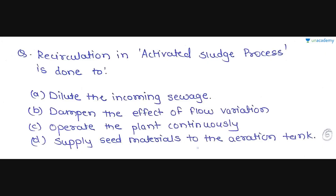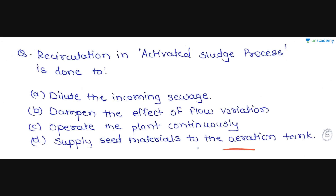The next question is: recirculation in the activated sludge process is done to — Option A is dilute the incoming sewage, Option B is dampen the effect of flow variation, Option C is operate the plant continuously, and Option D is supply seed material to the aeration tank. We do recirculation to supply seed material to the aeration tank in the activated sludge process. So option D is the correct option for this question.